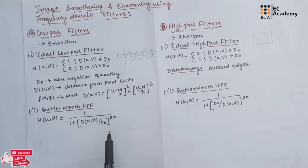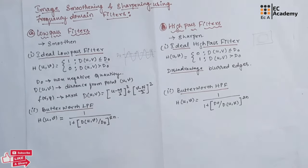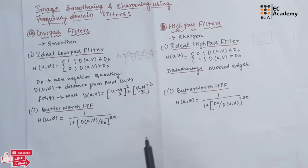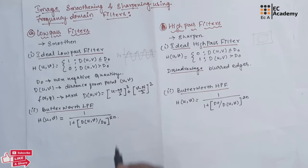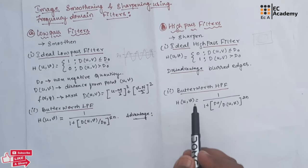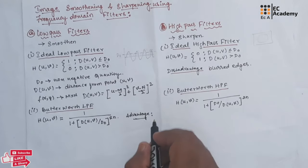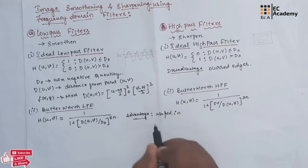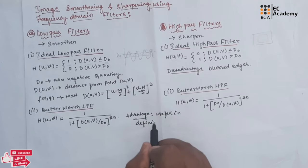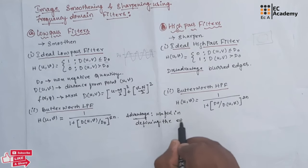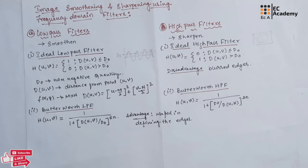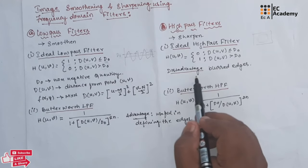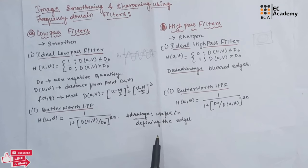As the N value increases, the Butterworth filter will act as an ideal filter. Hence, the N value should be maintained low so that we can remove the blurring of edges and edges can be defined clearly. The advantage of Butterworth filter in both low pass and high pass is that it is useful in defining edges in an image. To overcome the disadvantage of the ideal filter, we can use the Butterworth filter.